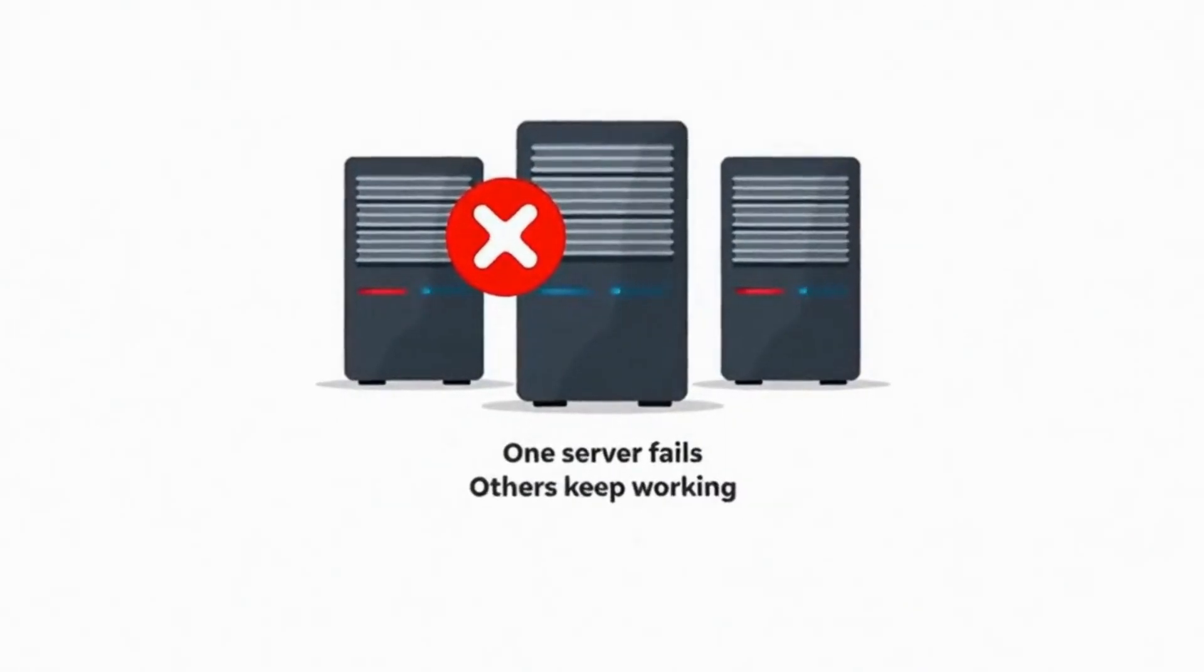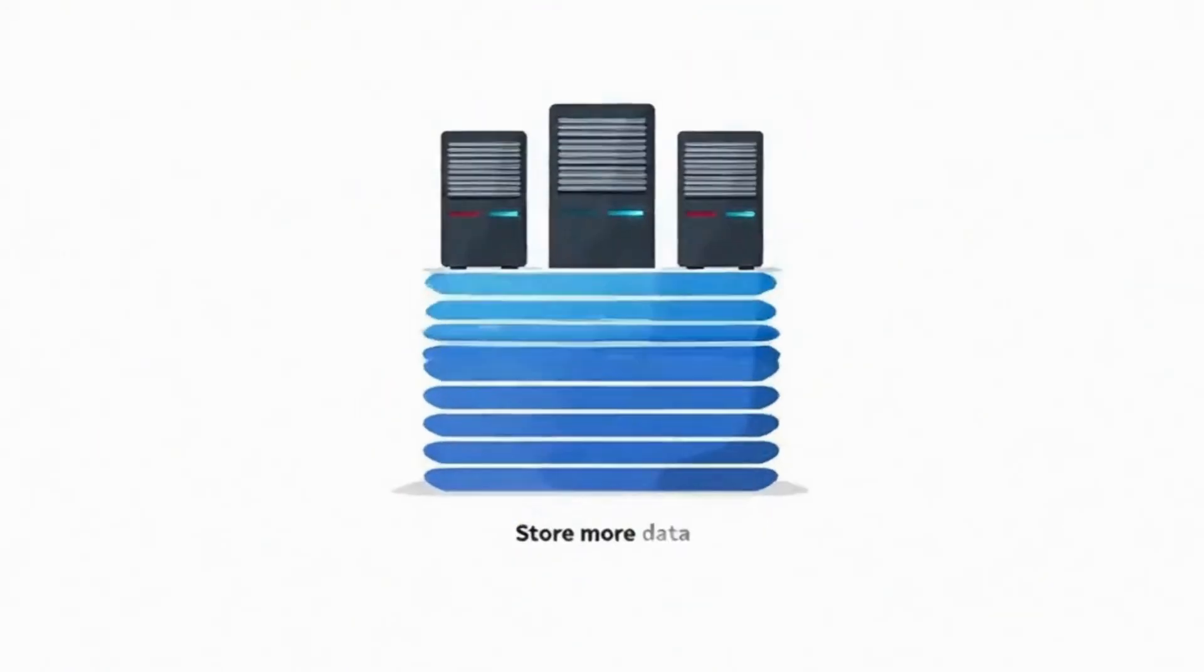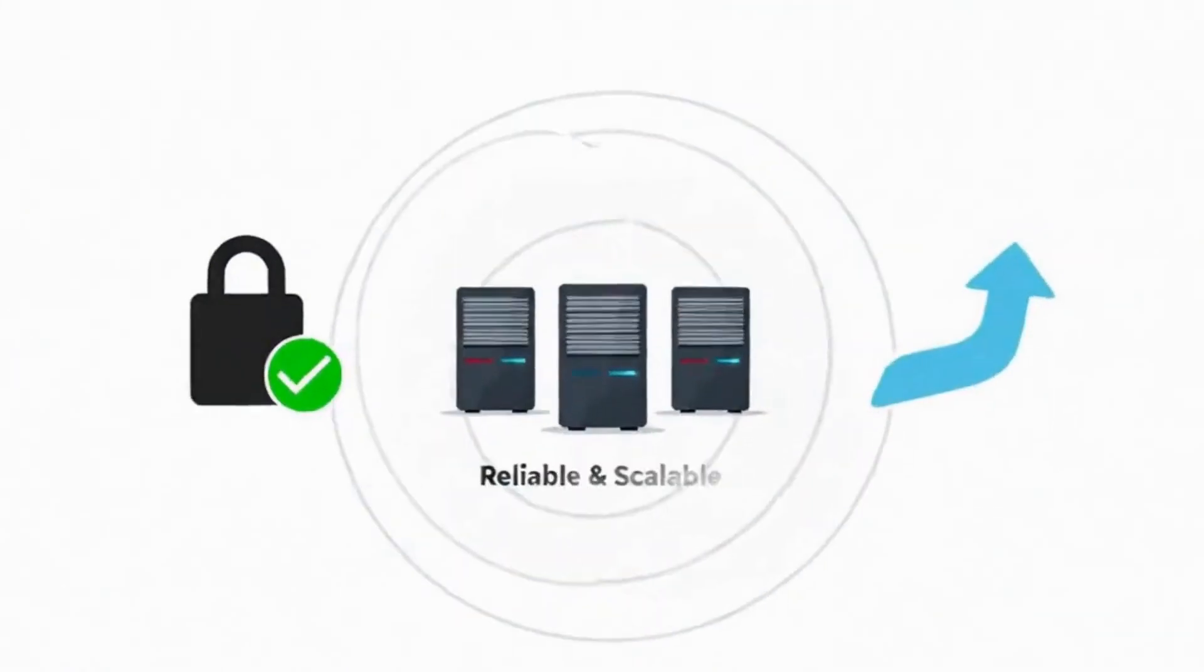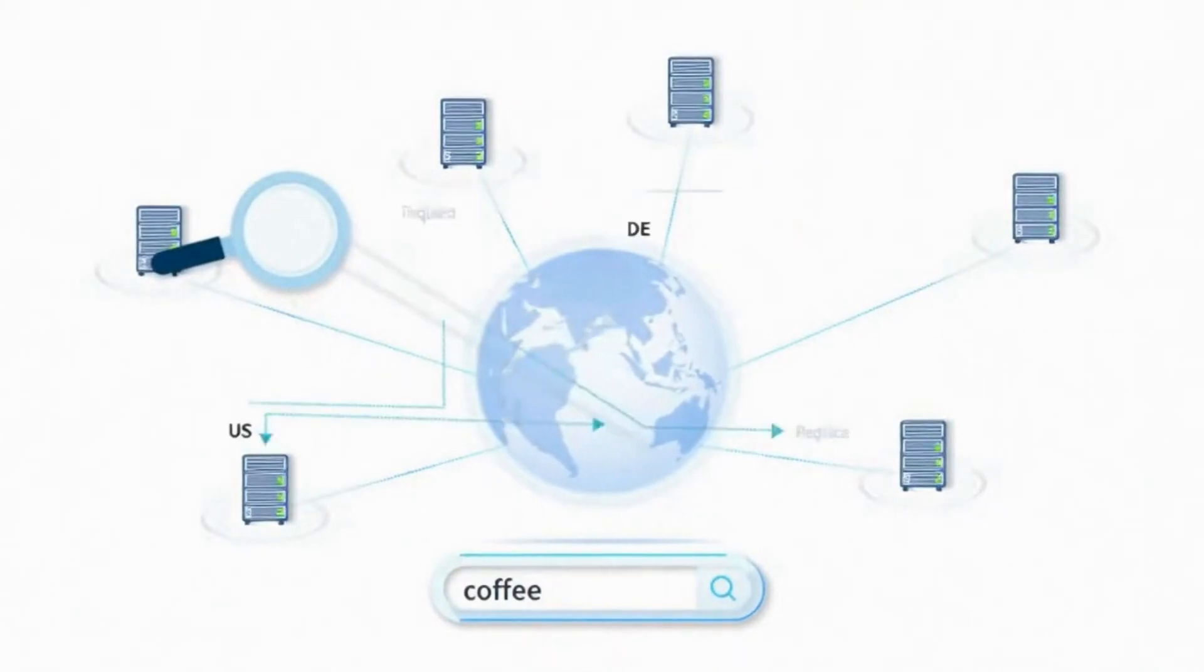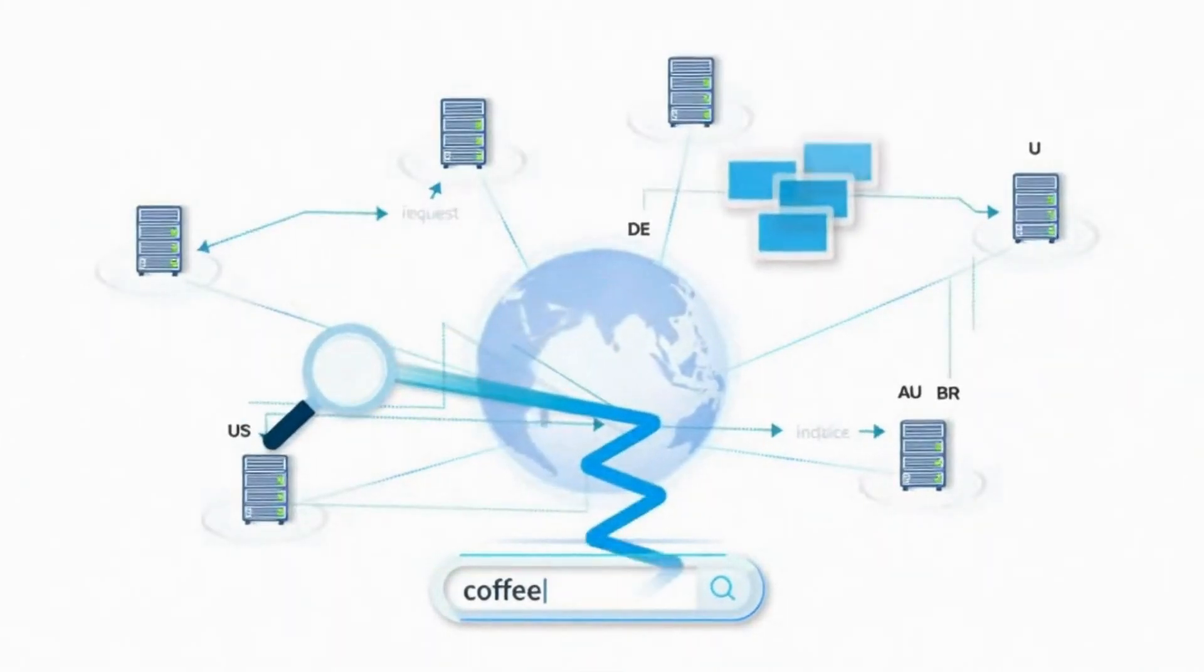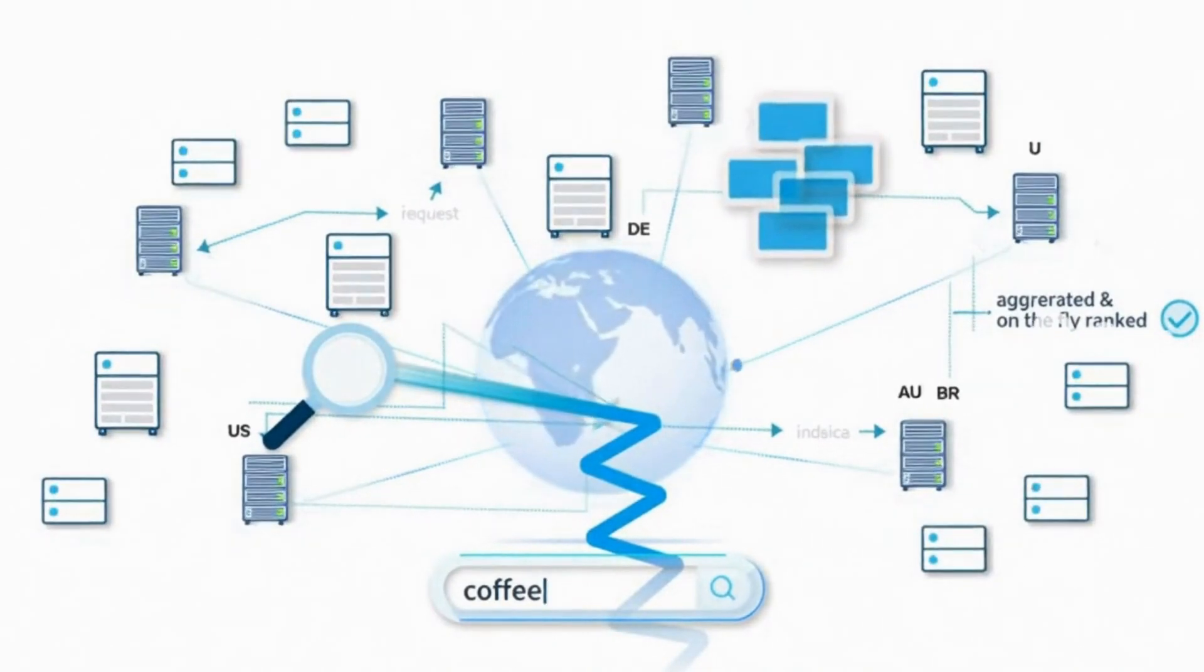This approach provides several benefits. If one server fails, others keep working. They can handle more users simultaneously, and they can store more data than any single computer could handle. Companies like Google and Amazon use distributed databases to serve billions of users worldwide. When you search on Google, your query might be processed by servers in multiple countries working together.